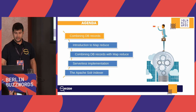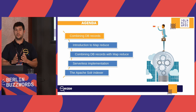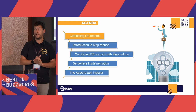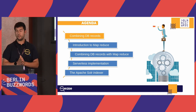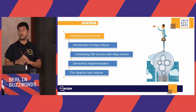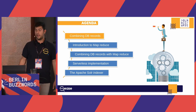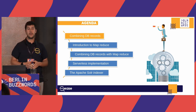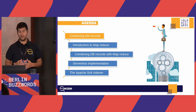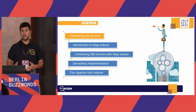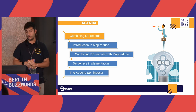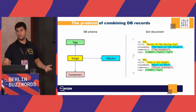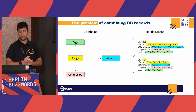What we'll see today: first, the problem of indexing — we have data spread into multiple tables in a relational database and we want to see what the problem of combining them is. Then I'll quickly introduce MapReduce, then we'll see how we can use MapReduce to combine database records, and finally we'll look at my implementation inspired by MapReduce using serverless technologies in AWS, and we'll see some results.